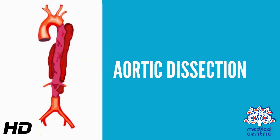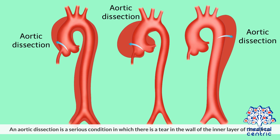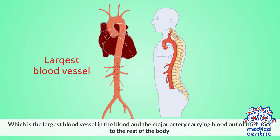Today's topic is aortic dissection. An aortic dissection is a serious condition in which there is a tear in the wall of the inner layer of the aorta, which is the largest blood vessel in the body, and the major artery carrying blood out of the heart to the rest of the body.